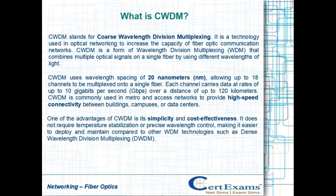One of the advantages of CWDM is its simplicity and cost-effectiveness. It does not require temperature stabilization or precise wavelength control, making it easier to deploy and maintain compared to other WDM technologies such as Dense Wavelength Division Multiplexing (DWDM).